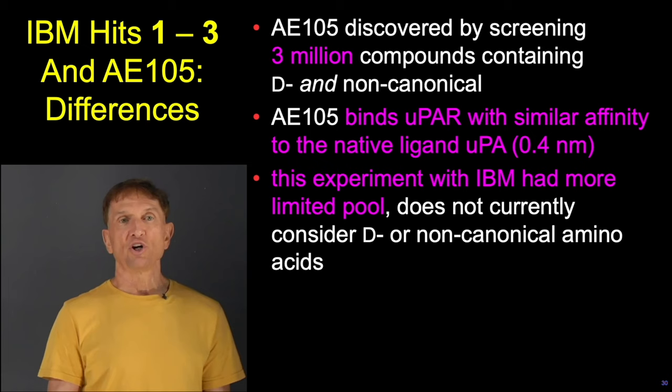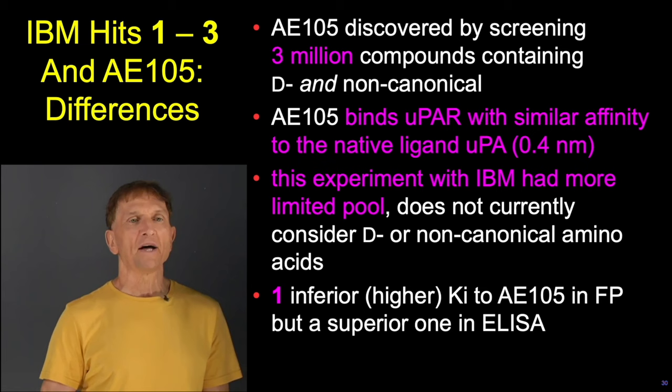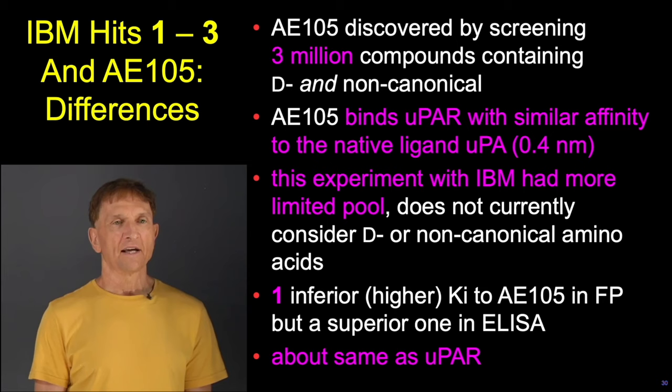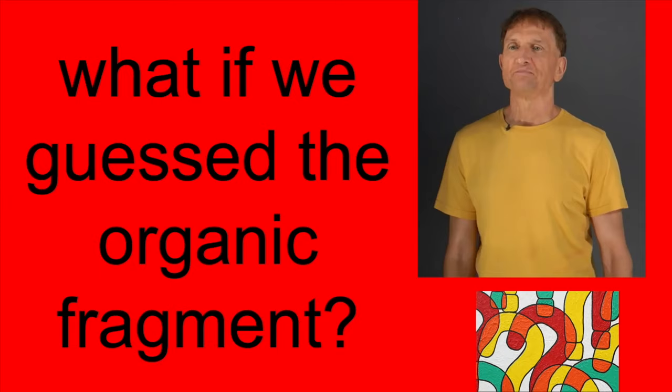The experiment with IBM was made synthesizing only five analogs, and we didn't even consider D or non-canonical amino acids — though we easily could. We found that compound one had slightly inferior binding in the FP assay but very marginally superior binding in the ELISA assay. We think one and AE105 are comparable, but we put very much less work in the lab to discover our lead. That's the purpose: to take us to candidates as quickly as possible, avoiding experimentation altogether.